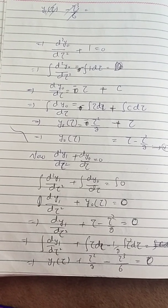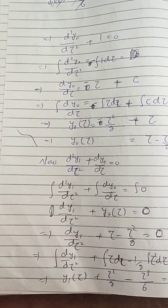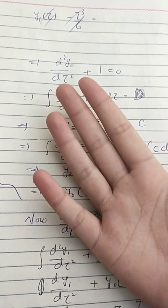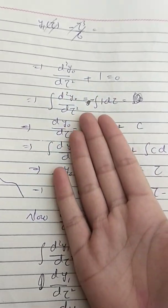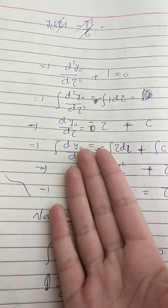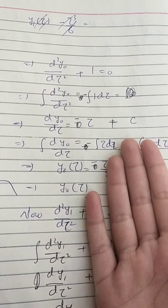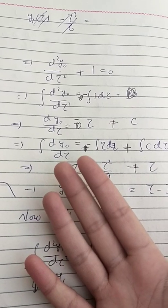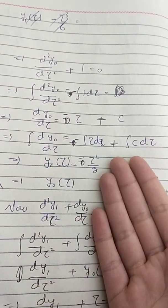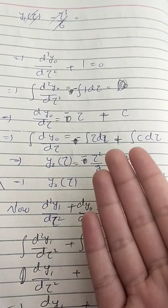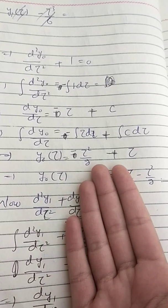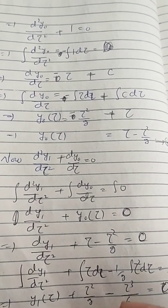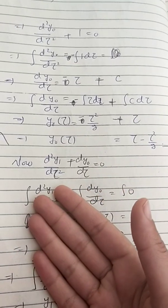Solving the zeroth-order equation d²y₀/dτ² + 1 = 0, we integrate both sides to get dy₀/dτ = -τ plus a constant. Integrating again, we get y₀ = -τ²/2 + τ, giving us equation 4.